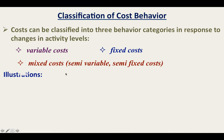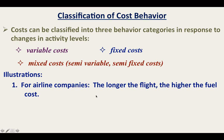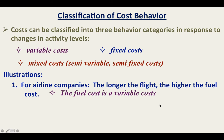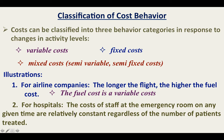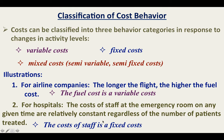Let us have an illustration of variable cost and fixed cost. For airline companies, the longer the flight, the higher the fuel cost. So the fuel cost is a variable cost because it is determined by the mileage of the flight. For hospitals, the cost of staff at the emergency room at any given time are relatively constant regardless of the number of patients treated. The cost of staff remains constant, so it is a fixed cost.